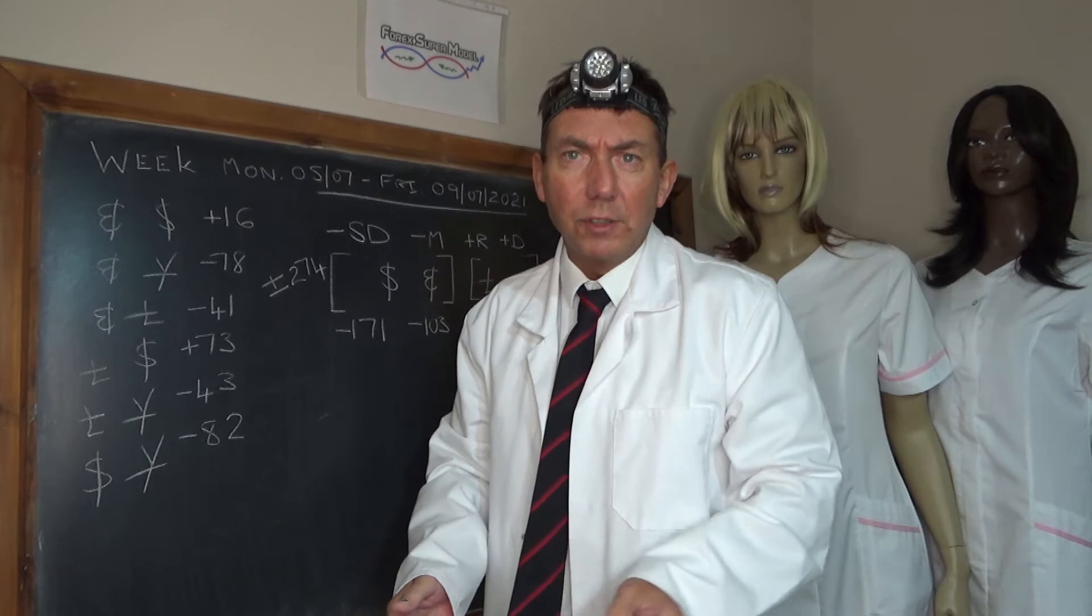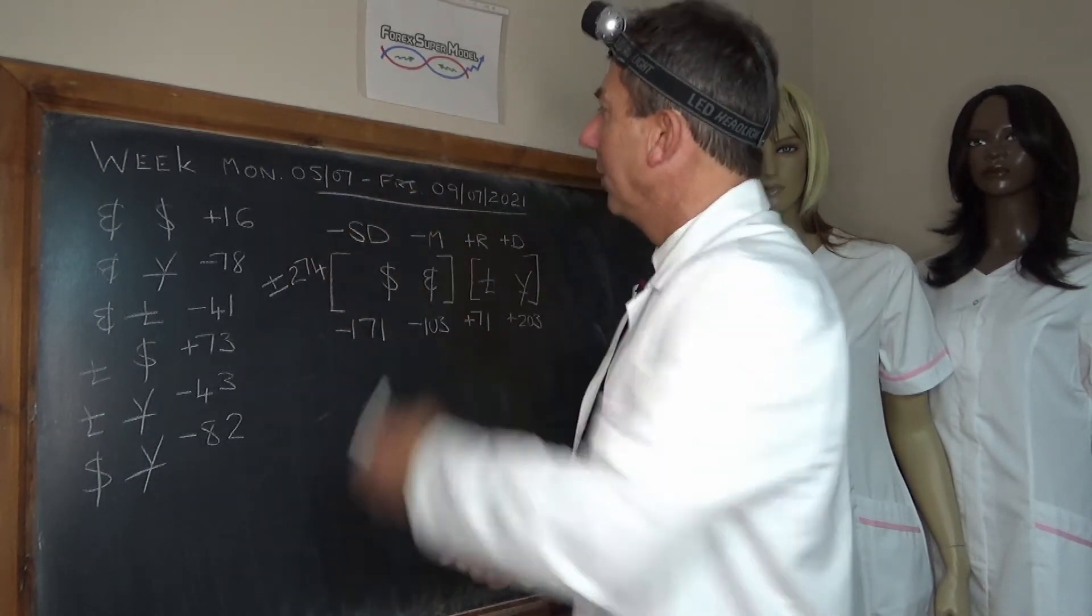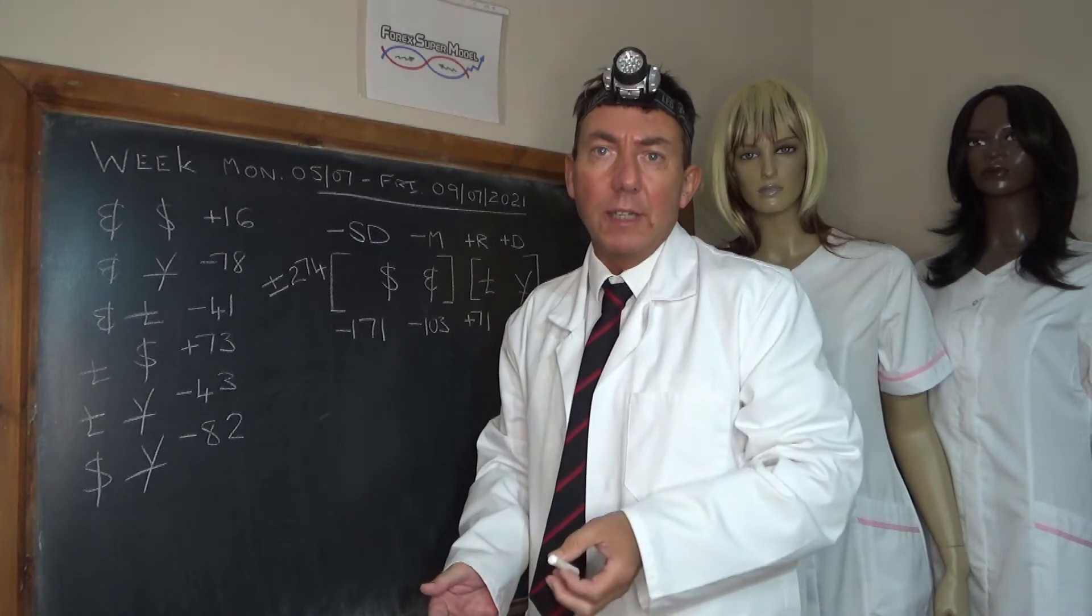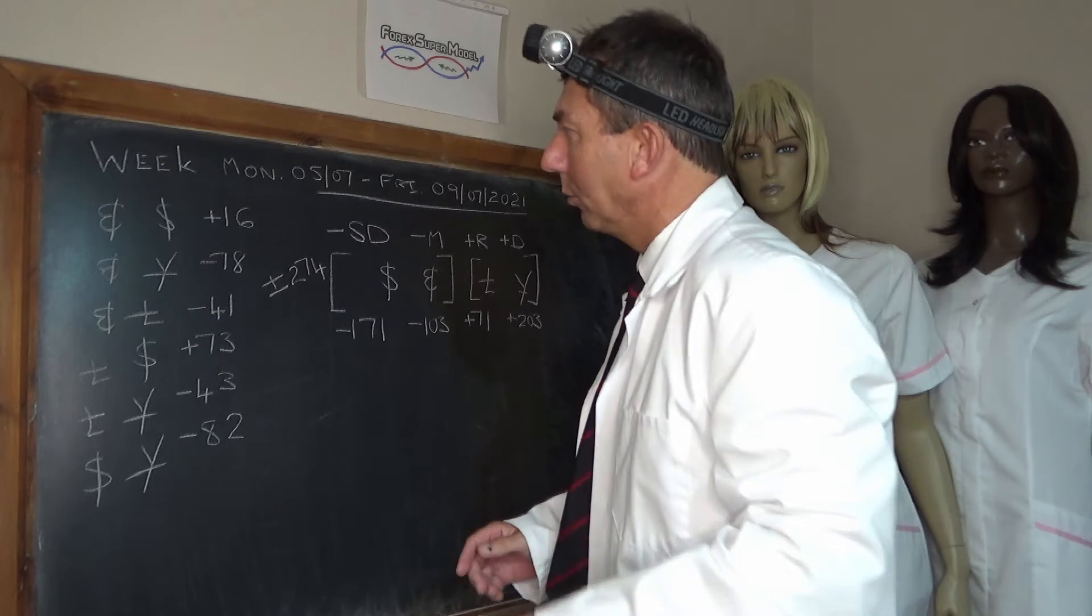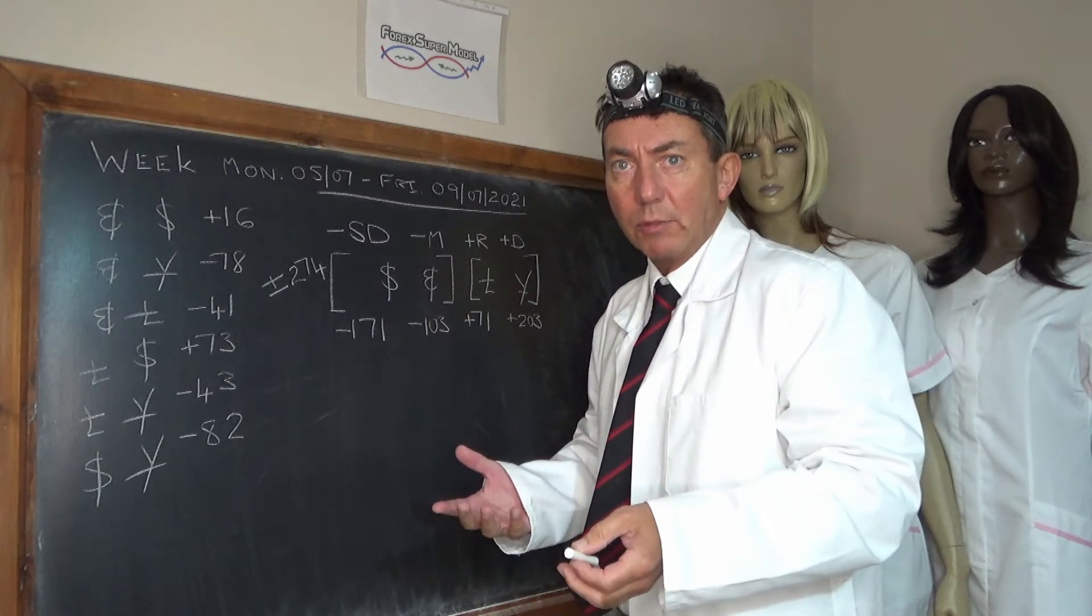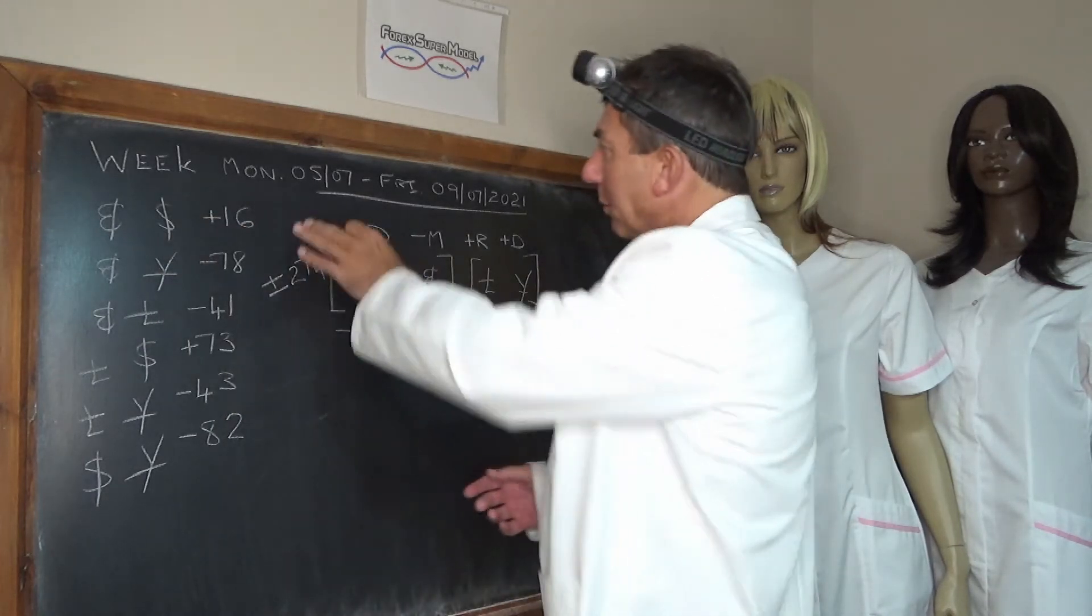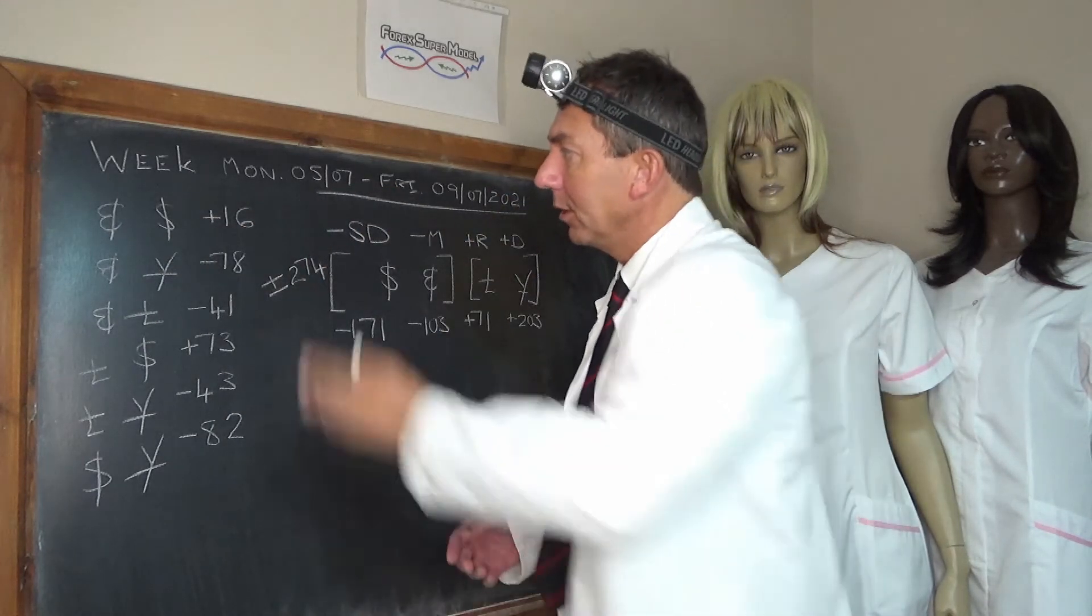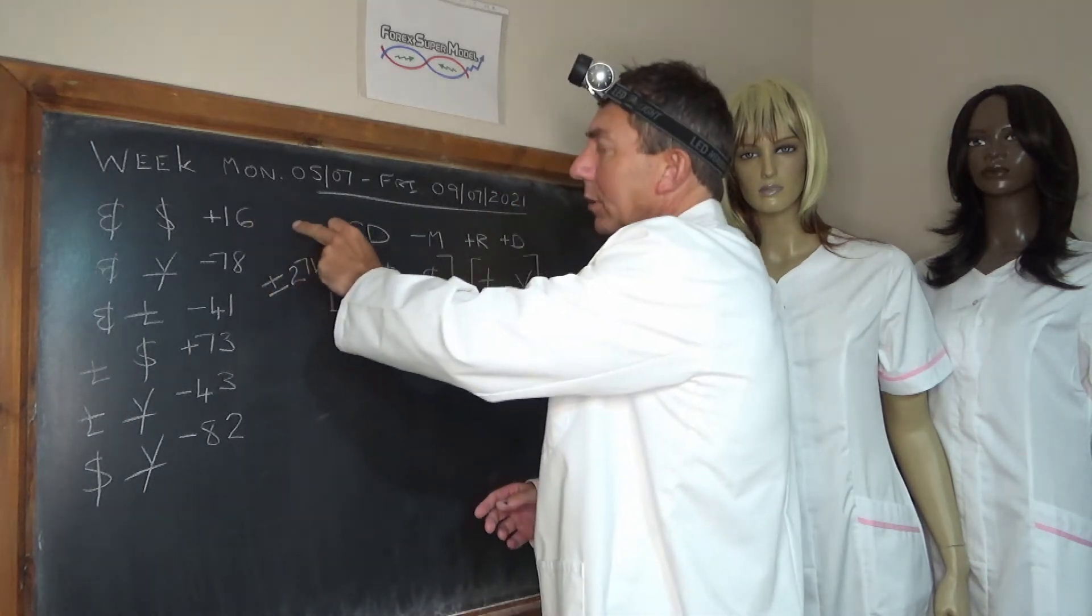Hello, I'm Professor Code and this is the 4X supermodel weekly flow review for Monday the 5th to Friday the 9th of July 2021. We've written up the weekly flows to get us underway. We're going to stop and start these videos to save time as we write things up. So, EURUSD plus 16. Over that period the EURUSD as an FX pair gained 16 pips.